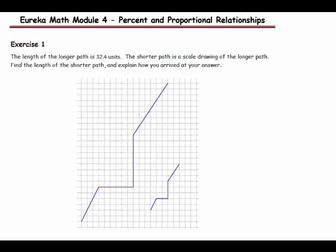Exercise 1: The length of the longer path is 32.4 units. The shorter path is the scale drawing. Find the length of the shorter path and explain how you arrived at your answer. To recap: label which is the original and which is the scale drawing. Then measure either the vertical or horizontal segment for each. Calculate your scale factor, then multiply it by the length of the longer path to find the length of the shorter path. Pause the video and complete the exercise. Resume when you're ready to check your answer.